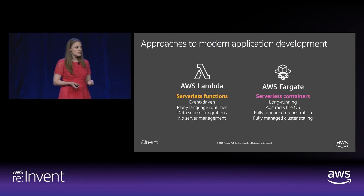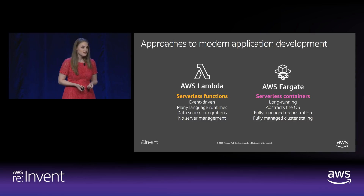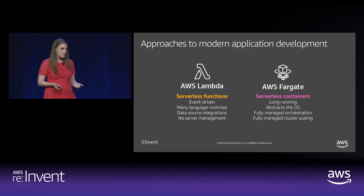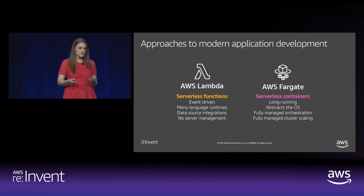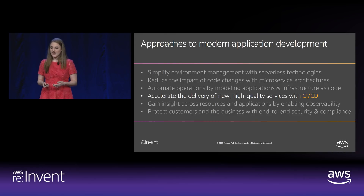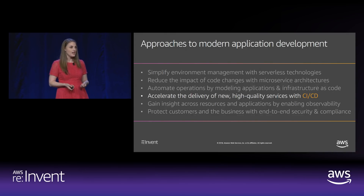In AWS, we have two serverless options. One is, of course, AWS Lambda for serverless functions, and the other is Fargate for serverless containers. I'm going to use both of these technologies in the demo tonight and reference both as we go through the CI/CD process. Tonight I'm focusing on CI/CD, and the goal is accelerating the delivery of new high-quality services with CI/CD.